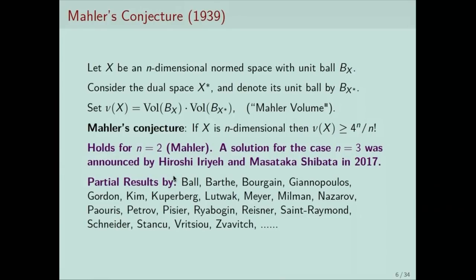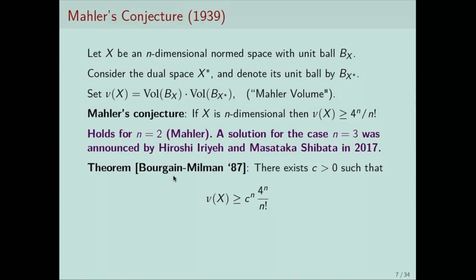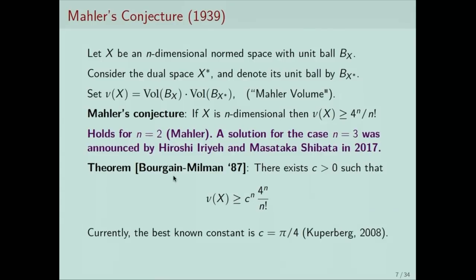There are many partial results about Mahler's conjecture. One important theorem is by Bourgain and Milman, where they gave a proof of the conjecture asymptotically — asymptotically in the dimension, the conjecture holds up to a constant. There is a universal constant such that one has this inequality. The conjecture is that C should be 1. The state-of-the-art result, as far as I know, for the numerical value of C is pi over 4, proved by Kuperberg in 2008.